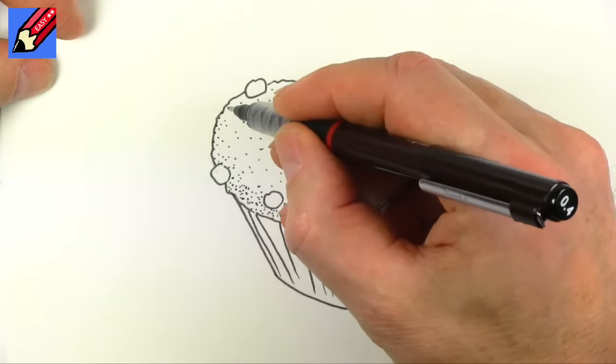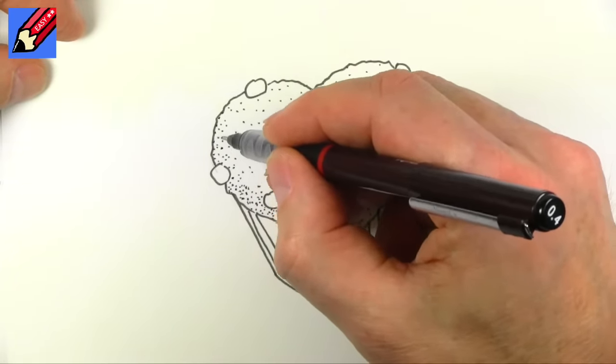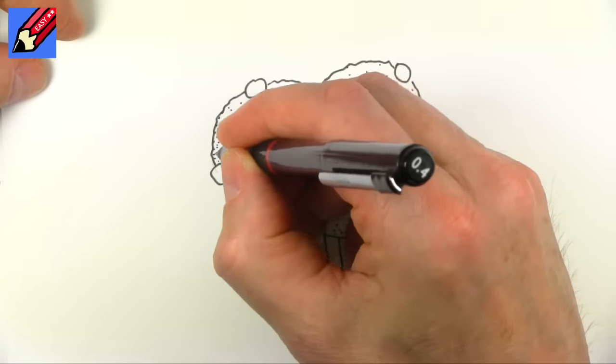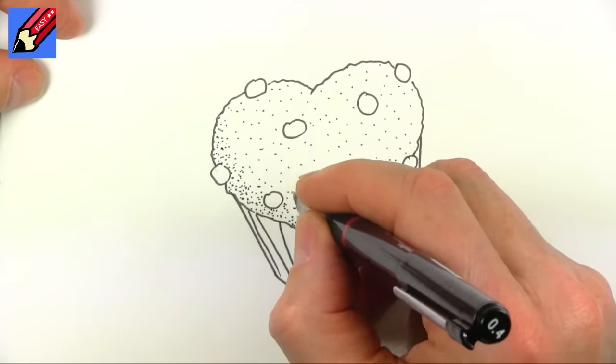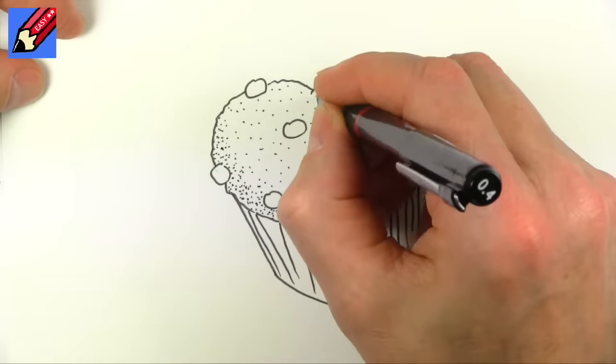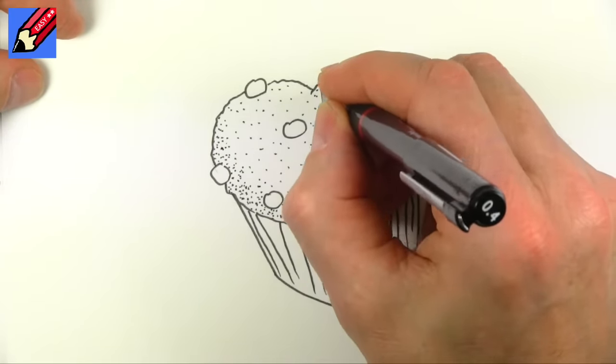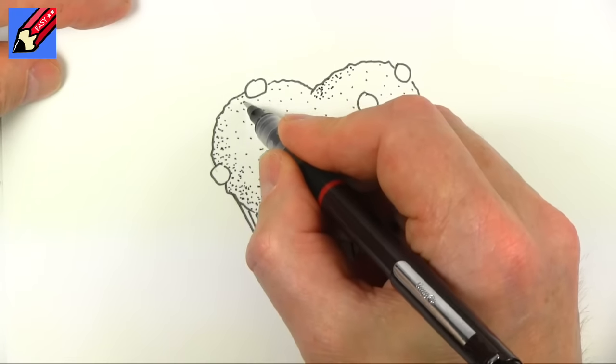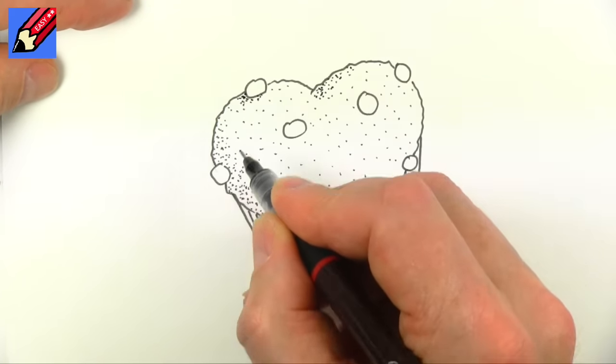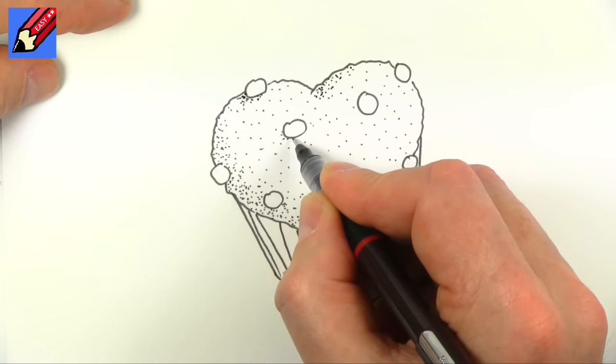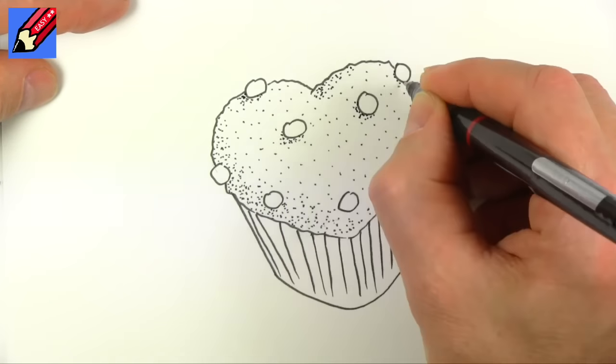But if you take your time and just put lots of dots in, it gives that really good kind of 3D effect. We can maybe put some in up there too, and I think we can put some in to shade in around the little chocolate chip bits—or they might be blueberries.